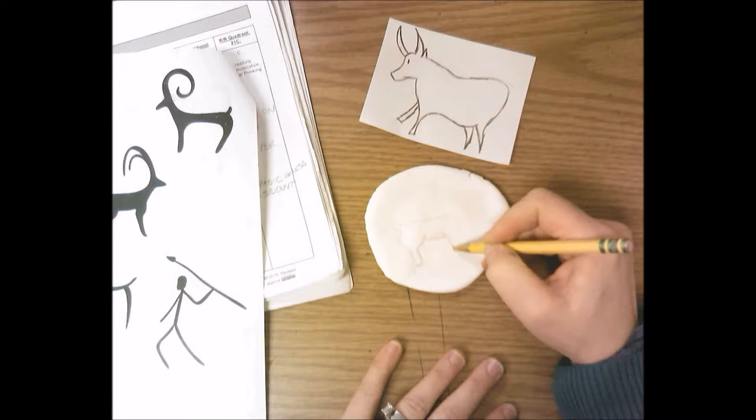You're going to draw lightly with your dull pencil, one that's not sharpened, because it'll be easier to draw with. A pointy pencil is going to keep getting caught in the model magic and won't go across it. After you get your animal drawn, you can draw some other symbols around your animal, and then you're going to go over it with black Sharpie marker.